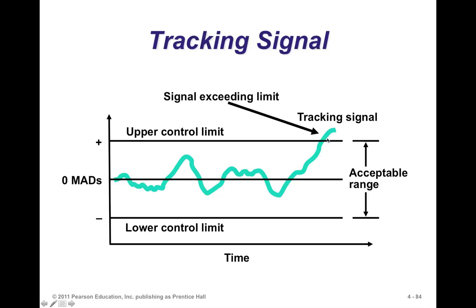We establish control limits — typically around 2.5 MADs — and once we are within that range, we're okay. But once the tracking signal falls outside the range, it tells you something is wrong with your forecasting model. This is similar to hypothesis testing with confidence intervals: when values fall outside the confidence interval range, we know we have an outlier.